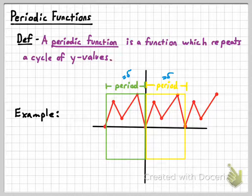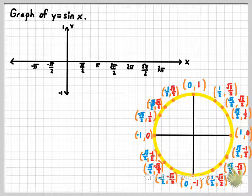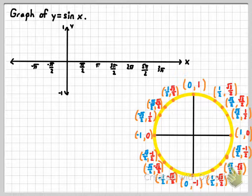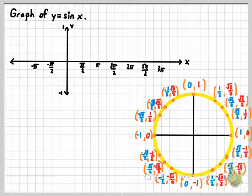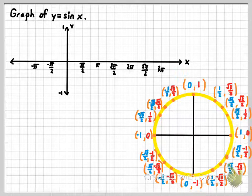Now let's shift focus to the two functions we're working with: y equals sine x and y equals cosine x. Let's look at y equals sine x first. I also want to talk about why it's called a circular function, so I'm going to use the unit circle to help us make the graph. Whenever we work with y equals sine x or y equals cosine x, the input is always going to be an angle measure.